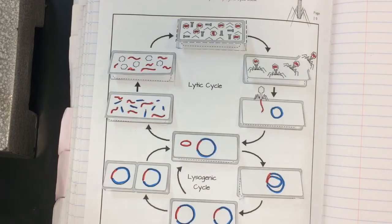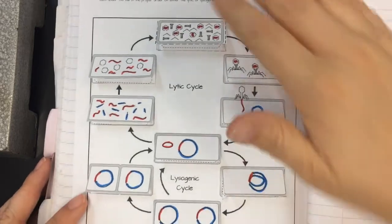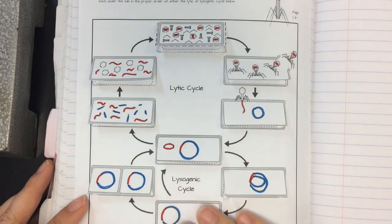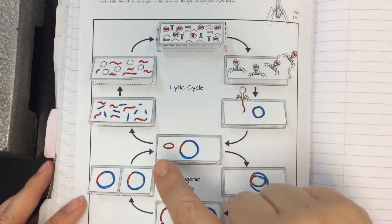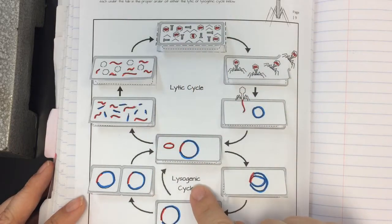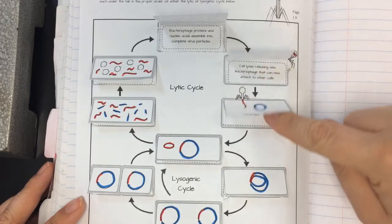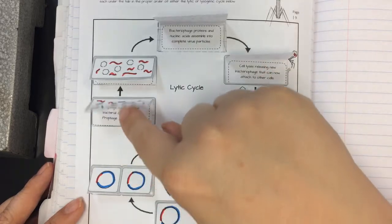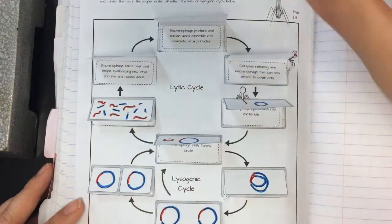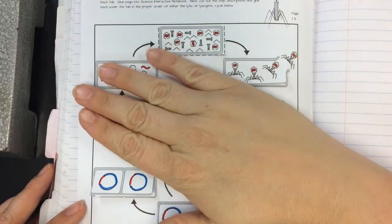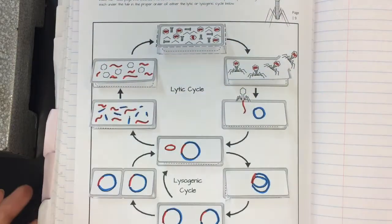Hi everyone, this is Ms. Segovia. I'm going to walk you through how to do the virus foldable. This is what the end product is going to end up looking like. You're going to have the little pictures of the virus, the lytic cycle and the lysogenic cycle, with the descriptions underneath the little flaps. I know there's been some confusion on how to put this together and I just want to make sure you know and give you some little quick tips and tricks.